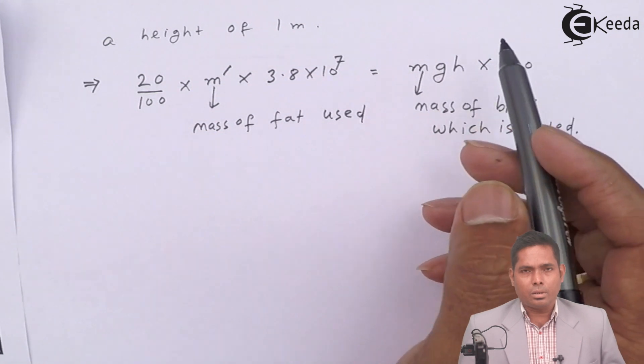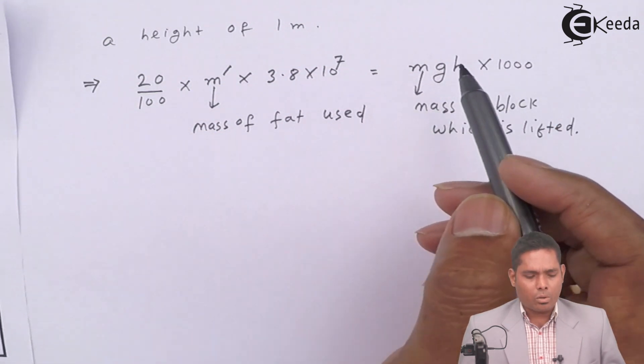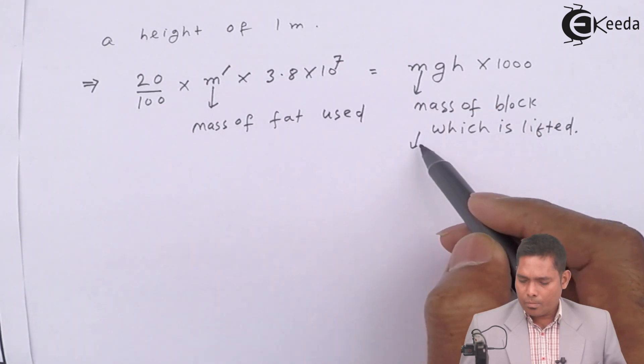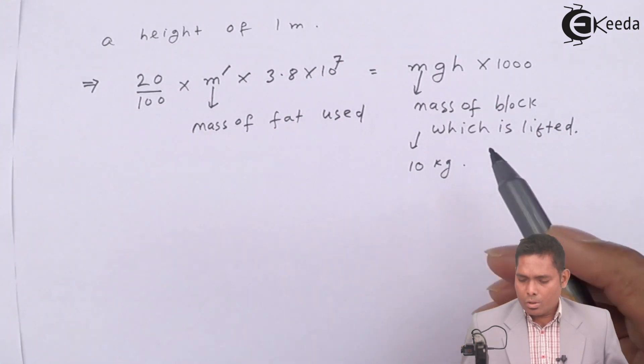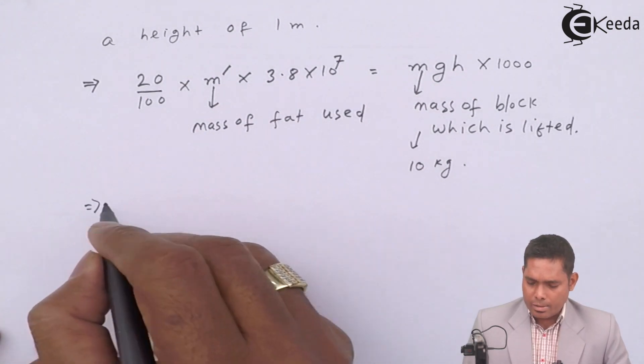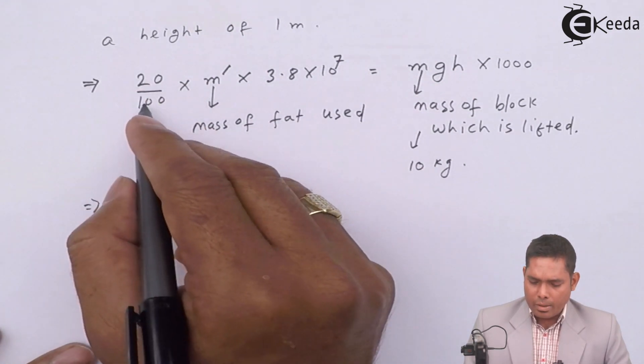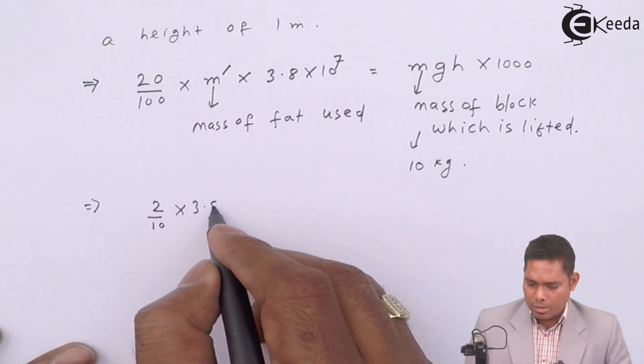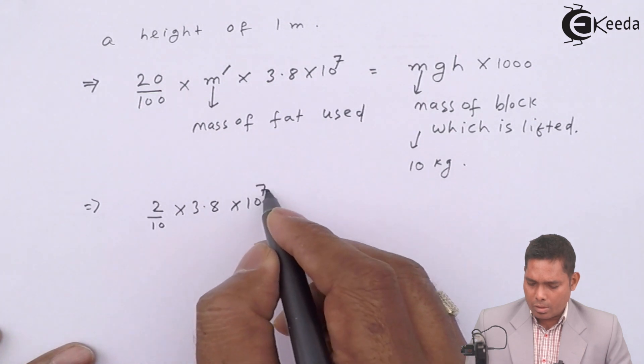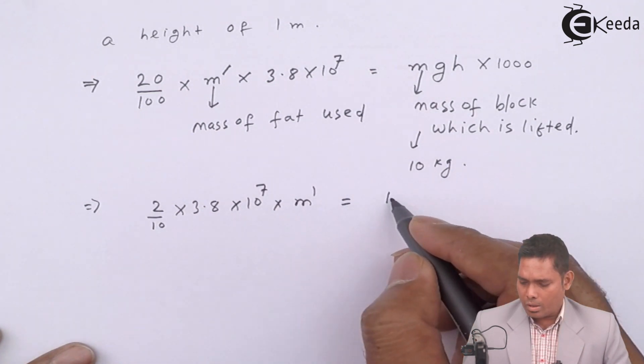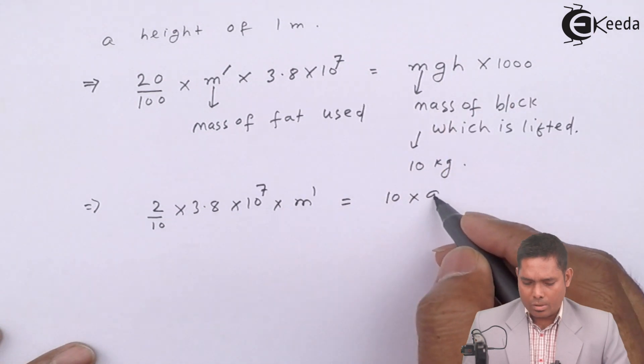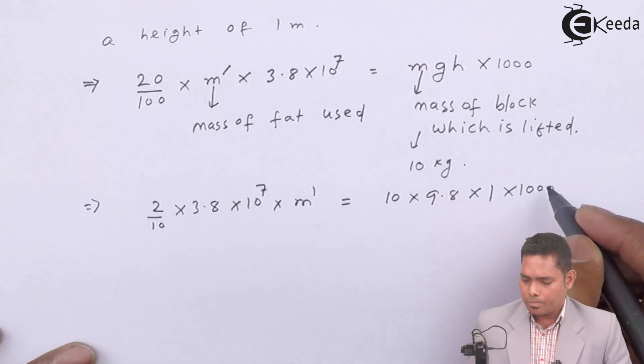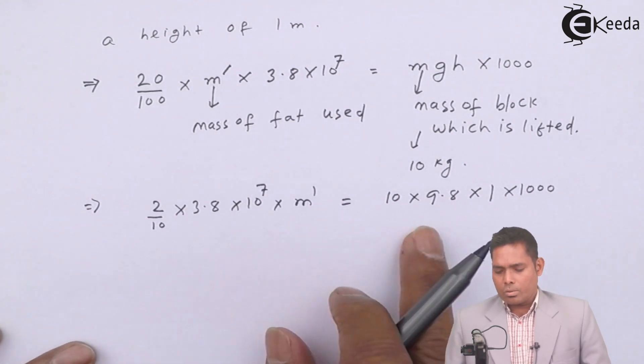So now I will write this as 2 by 10 into 3.8×10⁷ into m dash equals to 10 into g is 9.8, and the height is 1 meter, into 1000. So you have to solve this to get the value of m dash.